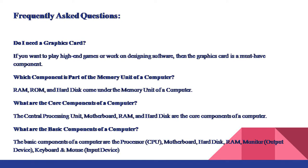What are the core components of a computer? The central processing unit, motherboard, RAM, and hard disk are the core components of a computer. What are the basic components of a computer? The basic components are the processor, CPU, motherboard, hard disk, RAM, monitor (output device), and keyboard and mouse (input device).